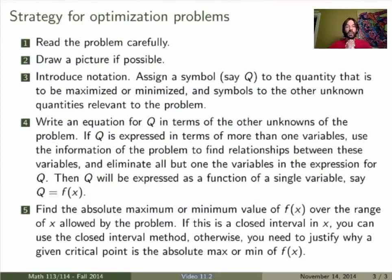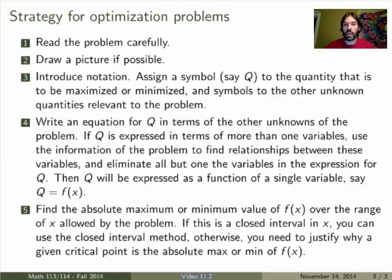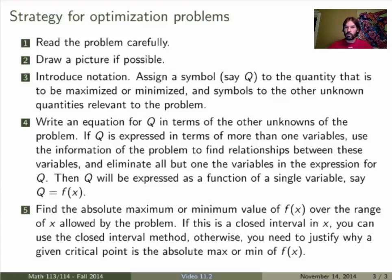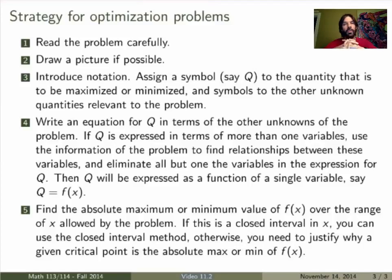So that was a very typical problem. Whenever you have to solve an optimization problem, here's a step-by-step strategy. First, read the problem carefully and draw a picture if necessary. Introduce notation: assign a symbol for the thing you're trying to maximize or minimize — here it was the cost function, called capital C — and assign symbols to all unknown quantities, here the radius r and height h. Then write an equation for the thing you're trying to minimize in terms of these unknowns. If you have more than one variable, find a relationship between them from the data of the problem — here it was the fixed volume constraint — so you can rewrite as a function of a single variable.